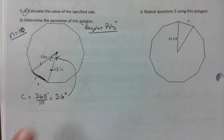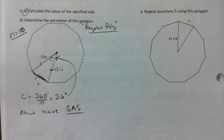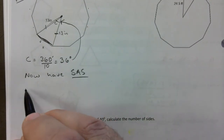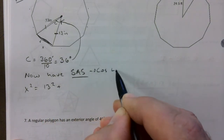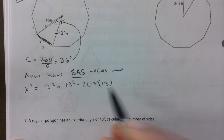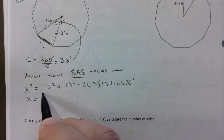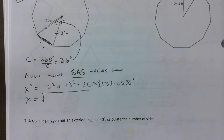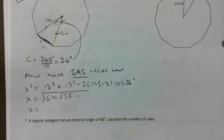To use the cosine law, we need the central angle. Count the sides: 1, 2, 3, 4, 5, 6, 7, 8, 9, 10 — n equals 10, a decagon. Central angle = 360 divided by 10 = 36 degrees. Now we have SAS, so: x² = 13² + 13² minus 2 times 13 times 13 times cosine(36°). That gives x = 8.03 inches.